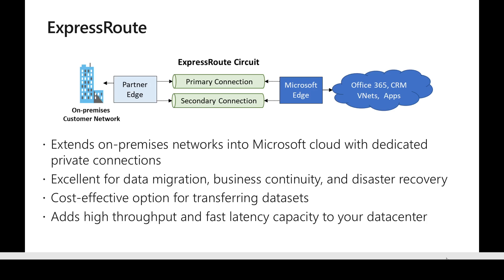If you look at how the ExpressRoute end-to-end connectivity looks, we have Azure on one side with a Microsoft edge enabling connectivity from the Azure data center, and on the other side we have the on-premises customer data center with a partner edge. Between those two, Microsoft creates an ExpressRoute circuit which is highly available. That's why we have two different connections: a primary connection and a secondary connection.